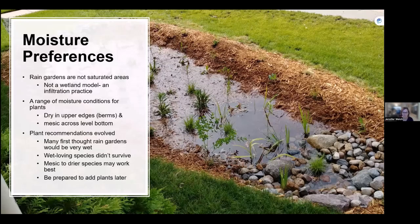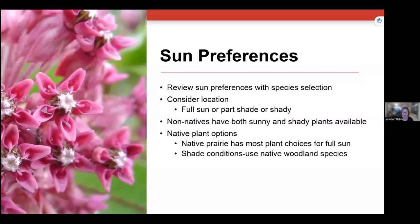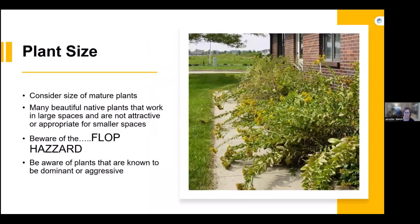When we first started building rain gardens, we thought they'd be very wet, but wet-loving species didn't survive because we're infiltrating the water — it's not a wetland, it's a little drier than you'd think. Sun preference depends on where the garden is located. Rain gardens can go in shady or sunny areas, and there are plant choices for both.